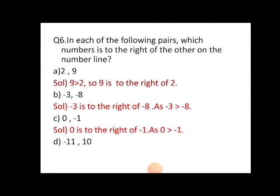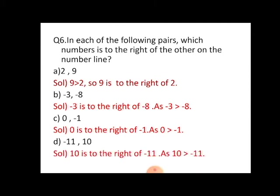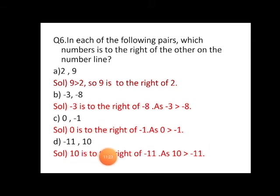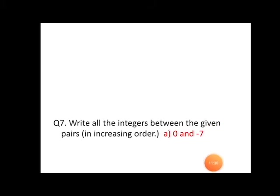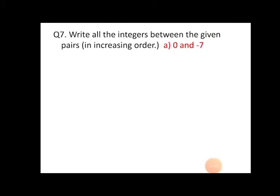For minus eleven and ten: among a negative and a positive number, the positive number ten is to the right of minus eleven, and ten is greater than minus eleven.